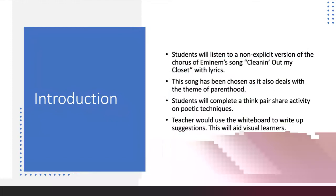Students will then complete a think-pair-share activity on poetic techniques. They will be given one minute to think independently, then pair up with their partner to discuss their thoughts for a minute, before sharing in the form of a class discussion. The teacher will use a whiteboard to write up suggestions, which will aid visual learners and allow less confident students to rely on their peers to share ideas without having to speak in front of the class themselves.